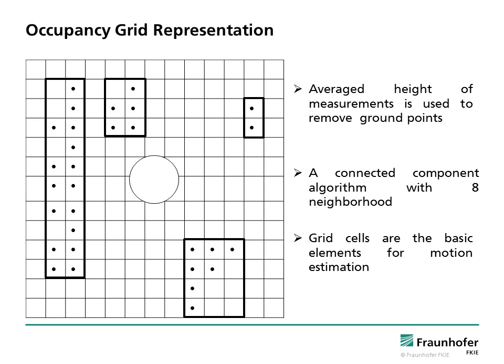Therefore, we mapped the measurements to an occupancy grid to reduce the amount of data. The average height of points in a grid cell is used to remove ground points. We used a connected component algorithm with eight neighborhoods to extract segmentation blobs. Here, points represent the center of mass of measurements falling in a grid cell.